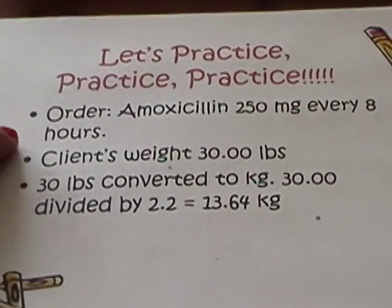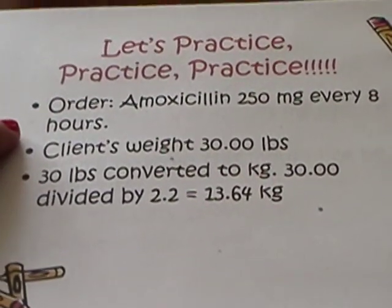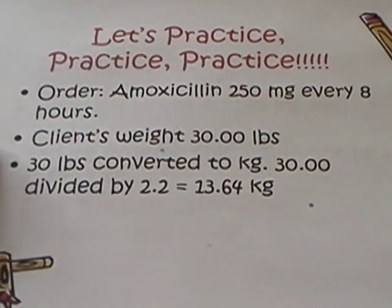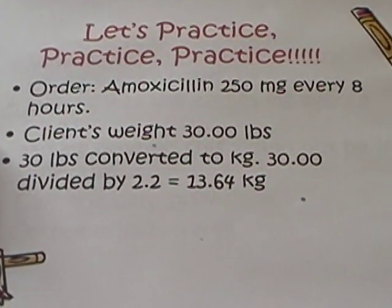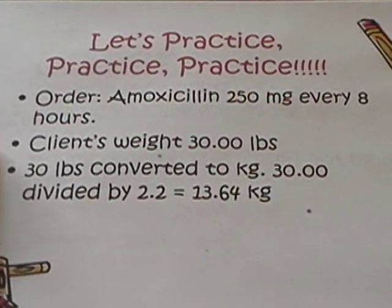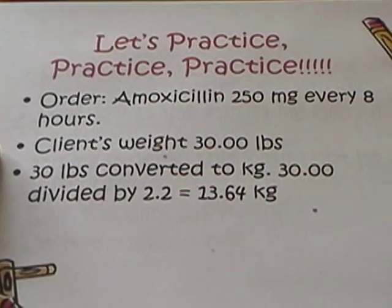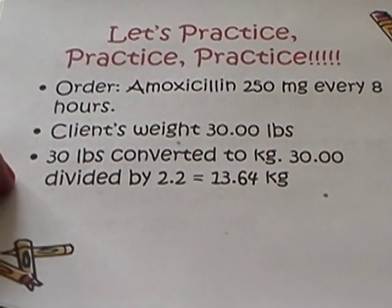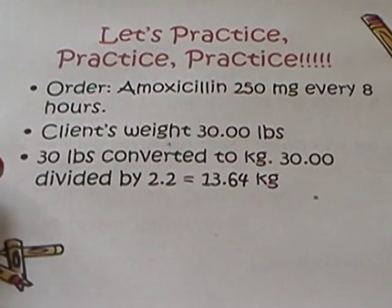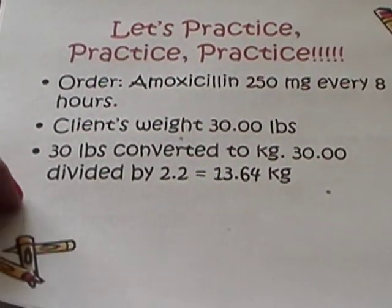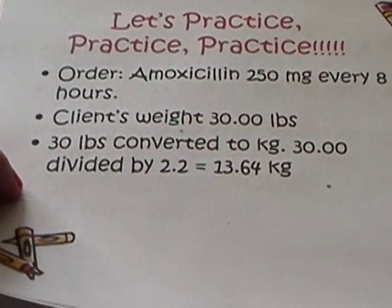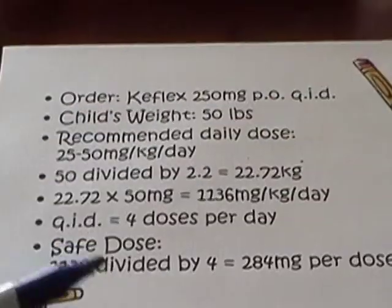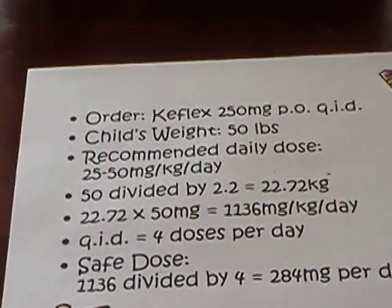We have an order for amoxicillin, 250 milligrams every eight hours to be given. Our client's weight is 30 pounds, and we verify that it's an accurate weight and a recent weight. We convert our 30 pounds to kilograms by dividing 30 by 2.2. We get 13.64 kilograms.